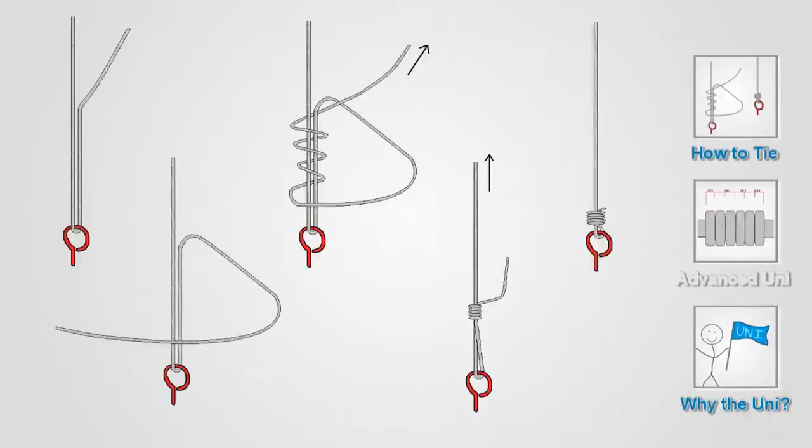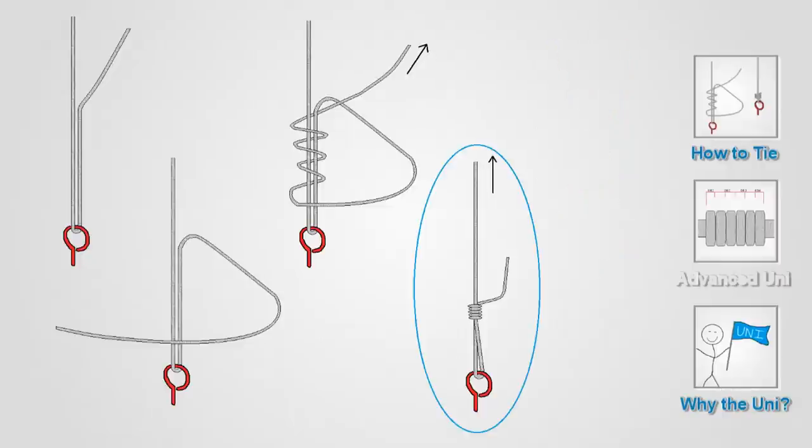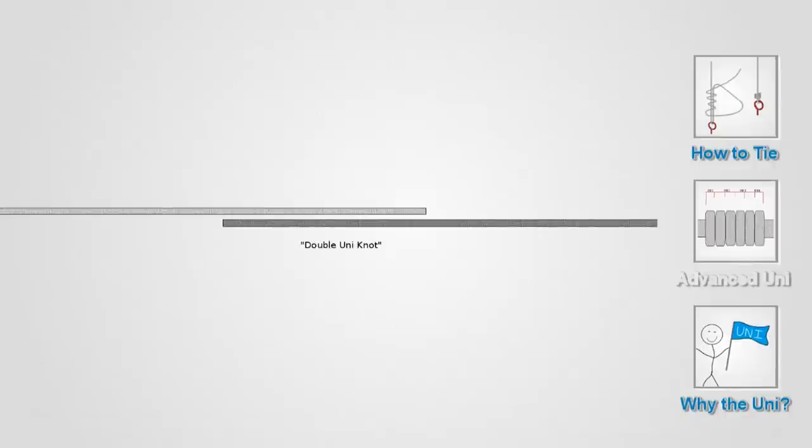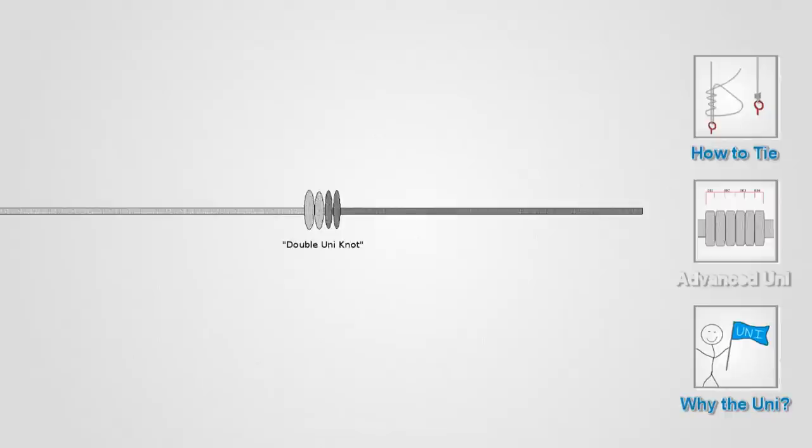Also, the Uni Knot has several different applications. For example, you can omit the final step and cinch the knot here by pulling the tag in snug, forming a loop knot. Also, this knot can be used as a line-to-line knot, like if you wanted to connect a fluorocarbon leader to braid. It's called the Double Uni Knot and you can search YouTube to learn how to tie that.